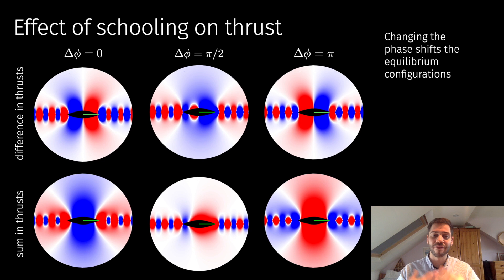We can also look at how the phase difference affects these curves. Now, on this top row, we have the difference in thrust, whereas on the bottom row we have the sum in thrust. Blue means that the sum in thrust of these wings is less than the sum if they were operating in isolation, whereas red means that you're basically getting more thrust out of your system compared to if they were in equilibrium. We're plotting a few configurations: in phase, half out of phase, and completely out of phase.